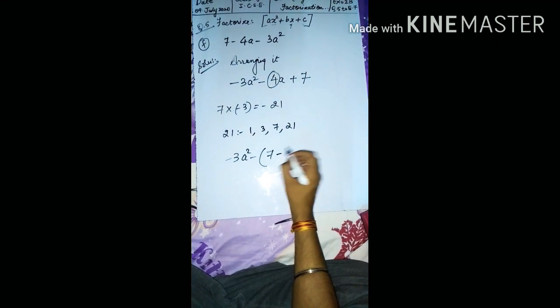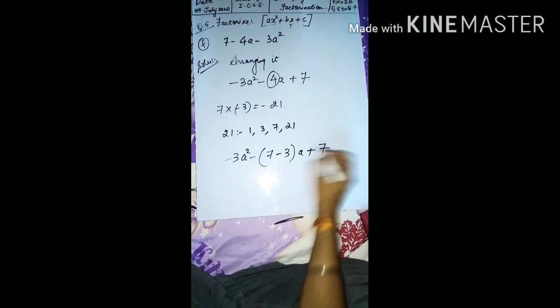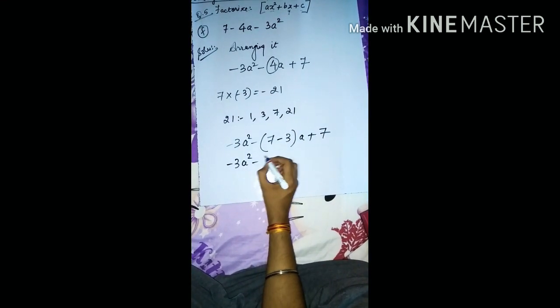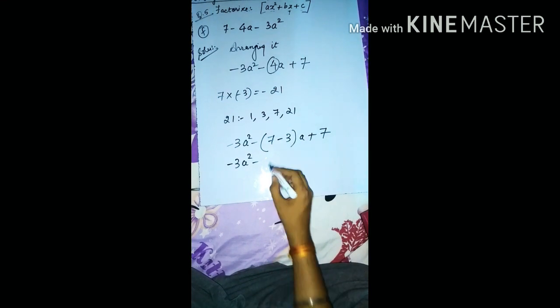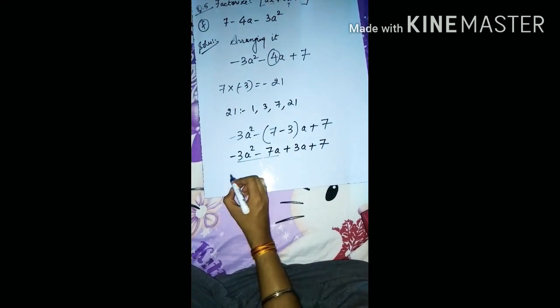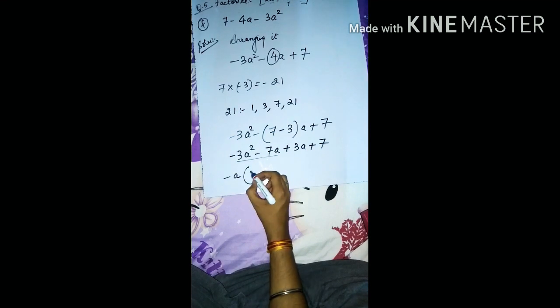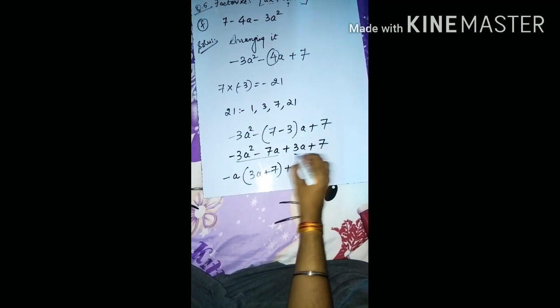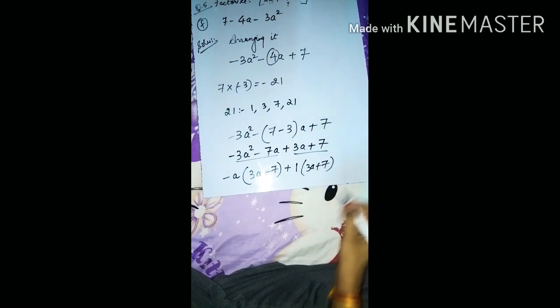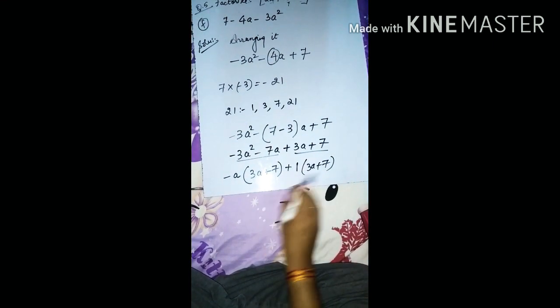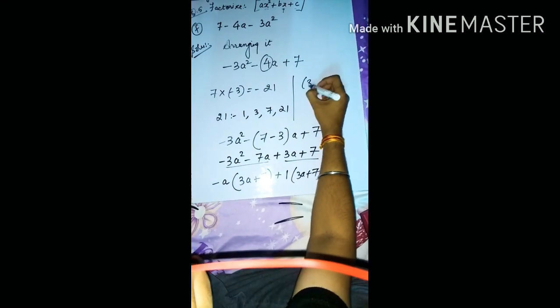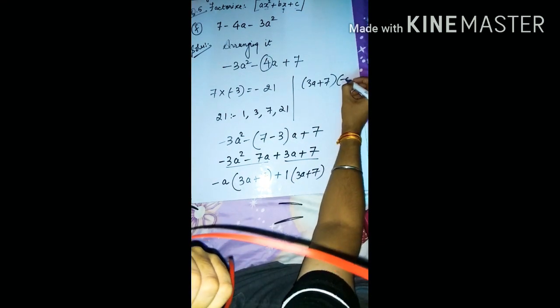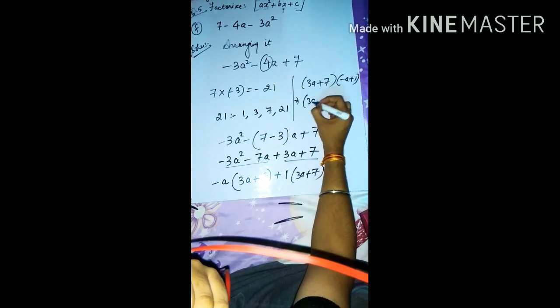So we write −3a² − 7a + 3a + 7. Multiplying through: take −a common from the first pair giving −a(3a + 7), and take 1 common from the second pair giving 1(3a + 7). Now take (3a + 7) common, so we get (3a + 7)(−a + 1), which can be written as (3a + 7)(1 − a). That is the final answer.